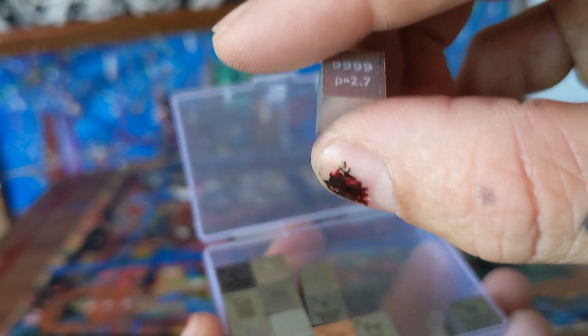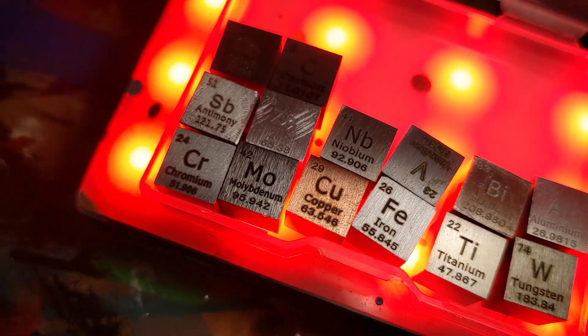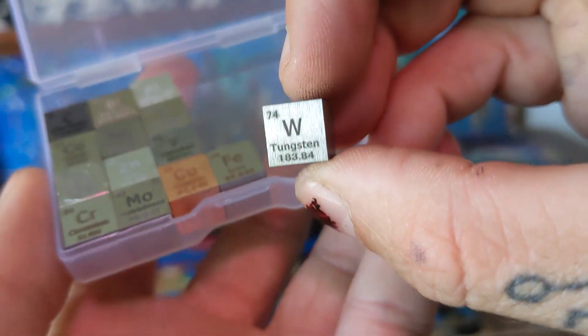Each cube has their name, shows their purity level, and their density. The lightest is magnesium and the heaviest is tungsten.